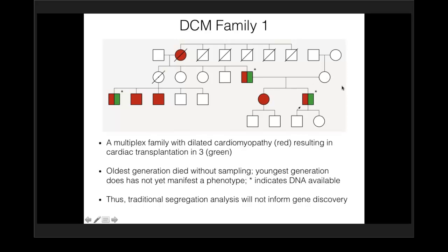That really makes traditional segregation mapping just not possible in terms of identifying the underlying gene or proving that a particular gene is causal. It isn't enough of an informative pedigree because you're missing the most senior generation and unable to phenotype the youngest generation. So we've used these families with whole exome sequencing and now whole genome sequencing to try to identify novel genetic causes, particularly by looking at distantly related individuals.